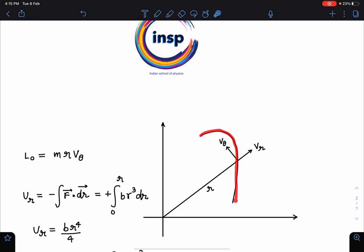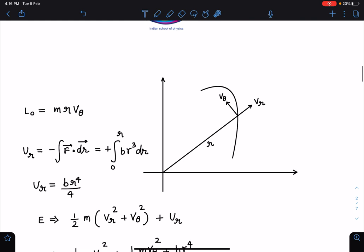One thing given to us is that L₀ angular momentum is constant, so I can write M R Vθ is constant. The force vector is given to us so we can write potential function for general R as minus integral vector F dot dR. If I substitute the value, I am getting the potential function as BR to the power 4.